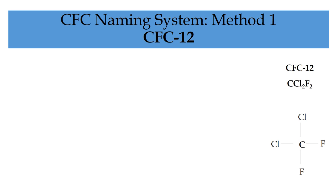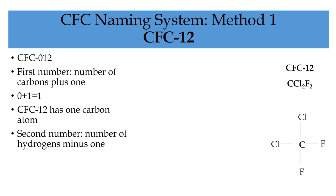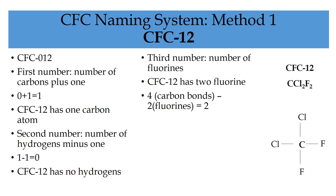The second example is CFC-12, and as this also has only two numbers, we need to add a zero in front of the 12 to make the numerical code CFC-012. The first number gives zero plus one carbons, so it has one carbon, just like CFC-11. Any CFC with only two numbers must have only one carbon. The second number gives one minus one hydrogen atoms, so CFC-12 also has no hydrogen atoms. The third number is the number of fluorines, so CFC-12 has two fluorines. Because two of the carbon bonds are taken up with fluorine, there must be two chlorines in CFC-12.